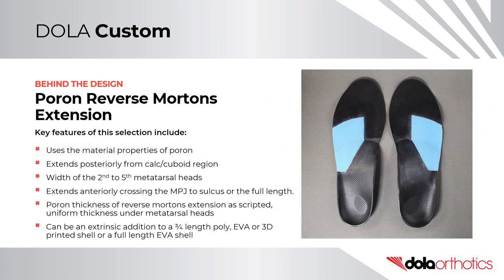A Poron reverse Morton's extension uses the cushioning properties of Poron. It extends posteriorly from the calc-cuboid region, the width of the second to fifth metatarsal heads, and extends anteriorly crossing the MPJ to the sulcus or full length. The Poron thickness is as scripted by the practitioner and is of uniform thickness under all metatarsal heads. It can be an extrinsic addition to a three-quarter length poly, EVA, or 3D printed shell, or applied to a full-length EVA shell.